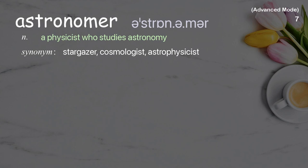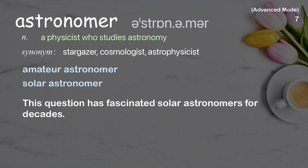Astronomer: A physicist who studies astronomy. Examples: Amateur astronomer, solar astronomer. This question has fascinated solar astronomers for decades.